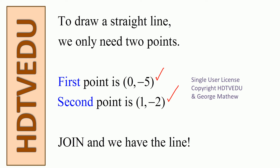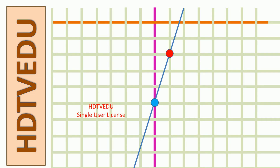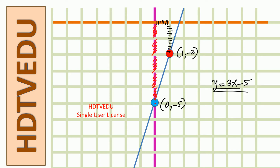So we have two points: (0, negative 5) and (1, negative 2). If you have two points, you can join them and make the line happen. On the graph, 0 negative 5 is plotted, and x equals 1 y equals negative 2 is plotted. Join those points and you have the line.